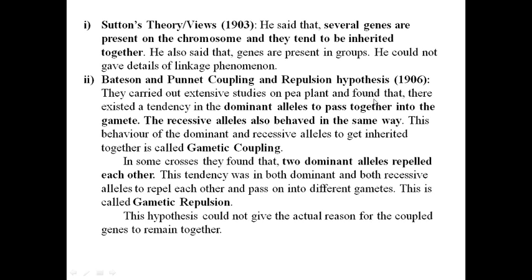Sutton's theory or views in 1903: he said that several genes are present on the chromosome and they tend to be inherited together. He gave the basic idea — not in detail — that genes are present in groups on chromosomes. However, he could not give details of the linkage phenomenon.